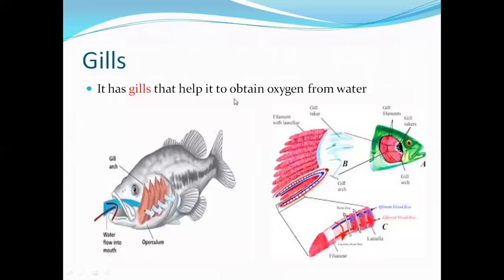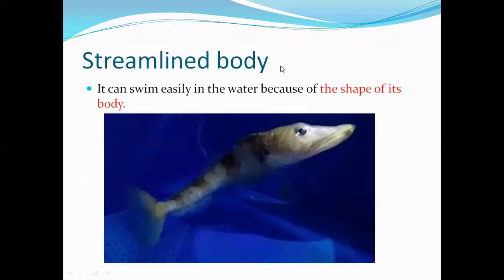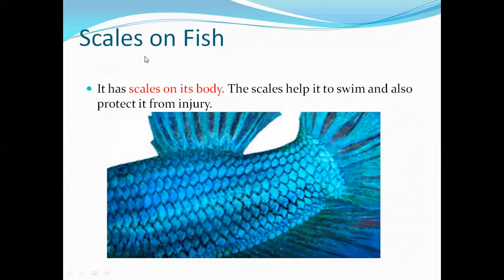It has gills — it helps to obtain oxygen from water. Streamlined body — it helps to swim very fast in the water. Scales on the fish — scales help to swim and also protect it from injury.